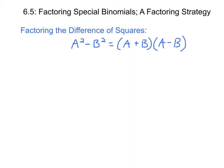The first technique is factoring the difference of squares. Whenever you have two terms that are both perfect squares — one expression squared minus another expression squared — and they are subtracted, you can factor that into (a + b)(a - b).